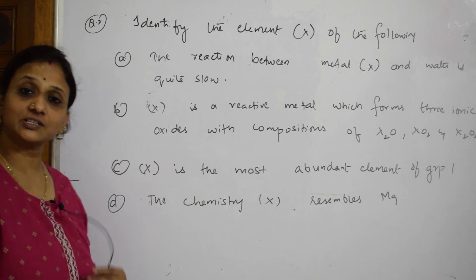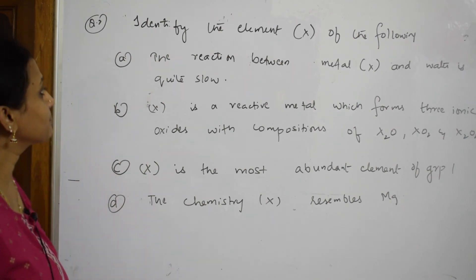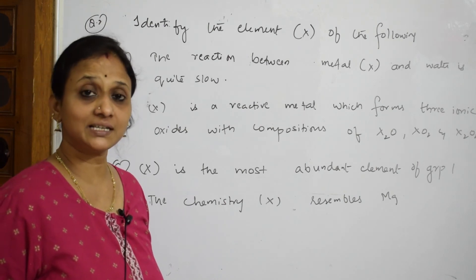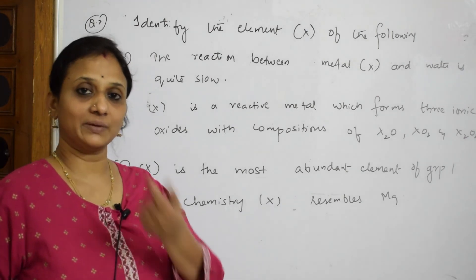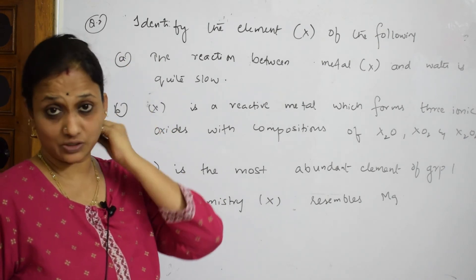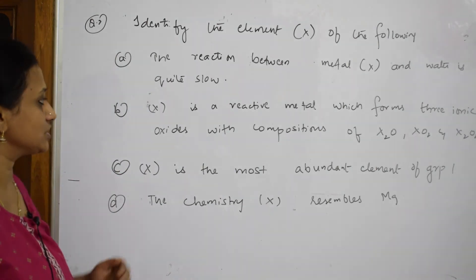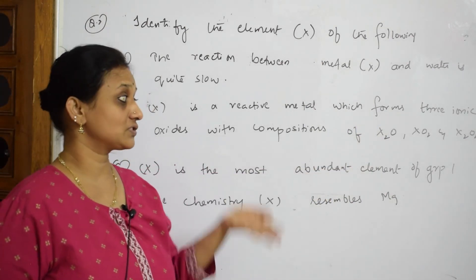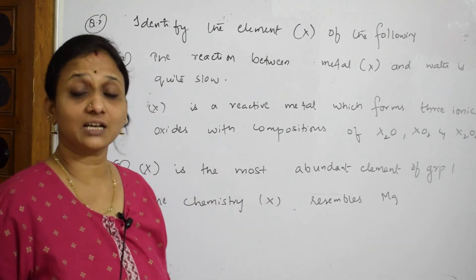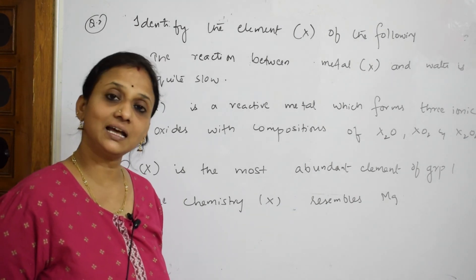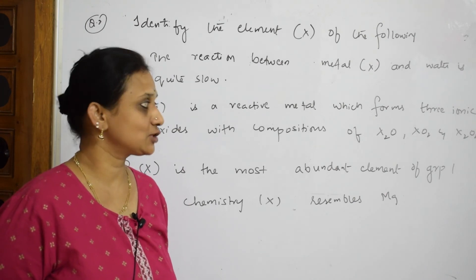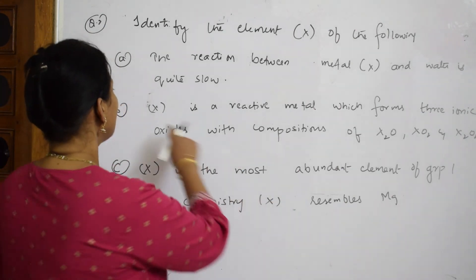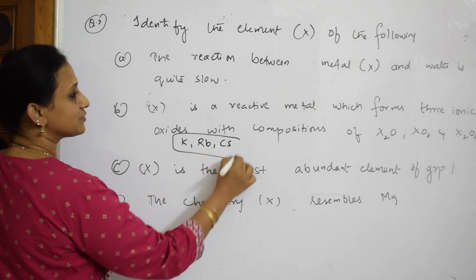Next question: 'Identify element X.' If the reaction of metal X with water is quite slow — recall lithium and magnesium react slowly. If X is a reactive metal forming three ionic oxides with compositions X₂O, XO₂ — forming both normal oxide and peroxide and superoxide — then X is potassium, rubidium, or cesium, since those alkali metals form peroxides and superoxides.